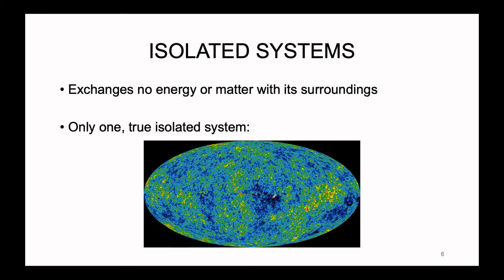Before we get into anything quantitative, it is important to further define the types of systems we focus on. The first type is known as an isolated system — a system in which neither energy nor matter is exchanged with the surroundings. There is only one true isolated system that we know of, and it is the entire universe. Our universe, as far as we have been able to observe, does not exchange energy or matter with anything surrounding it.